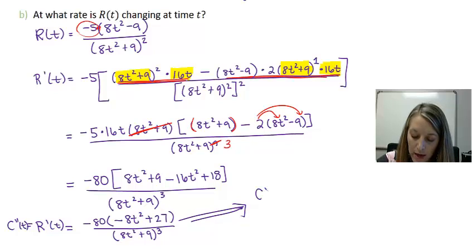Or if I factor a negative out of both of those pieces in the numerator, that tells me my second derivative or my rate derivative is equal to positive 80 times 8t squared minus 27 over this 8t squared plus 9 to the third.